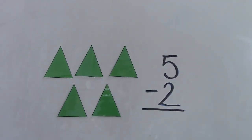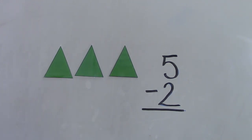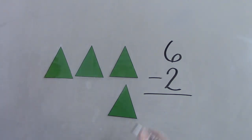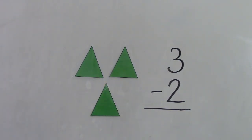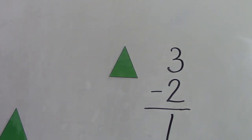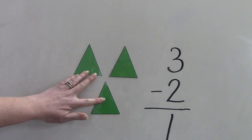Today we're looking at taking away 2 from a number, or subtracting 2. Our question says 5 take away 2 — what would our answer be? 3. Our next question is 6 take away 2 — what would our answer be? It's 4. 6 take away 2 is 4. Our next question is 3 take away 2 — what would our answer be? 1. 3 take away 2 is 1. When you're practicing taking away 2, I would like for you to use some objects to help you.